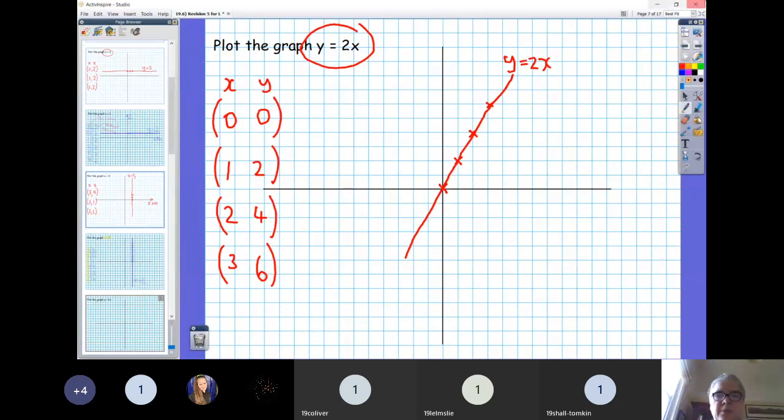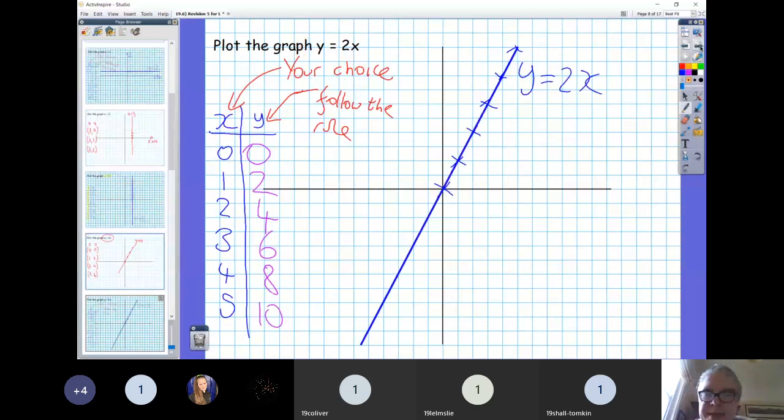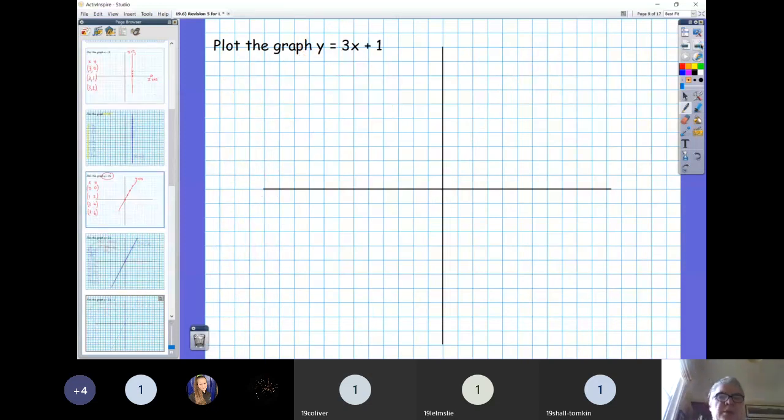So moving on to the next one. So a bit more going on here. See if you can go and generate the coordinates to plot y equals 3x plus 1. So just go and do three or four points, make up your own easy x coordinates, follow the rule to generate the y coordinates, and then plot them.